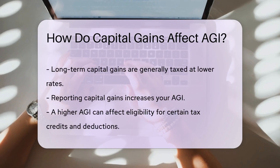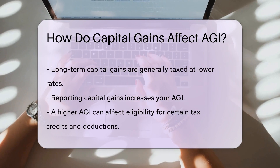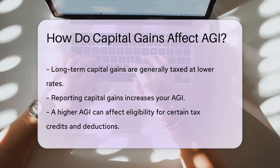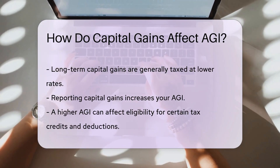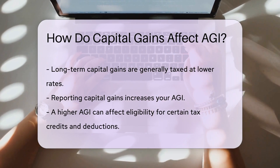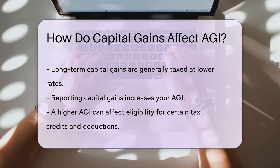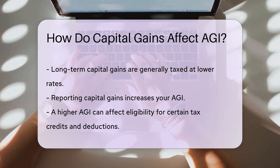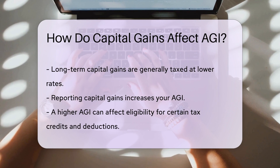The amount of capital gains you report will directly increase your AGI. Higher AGI can affect your eligibility for certain tax credits and deductions. Capital losses can offset capital gains, reducing your AGI.